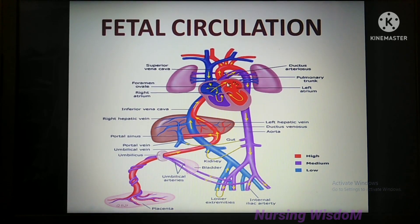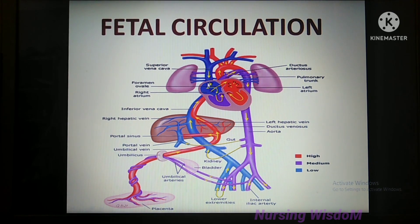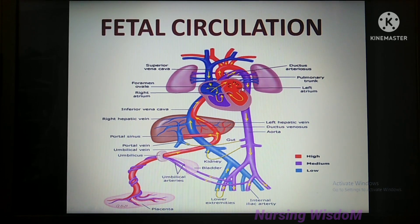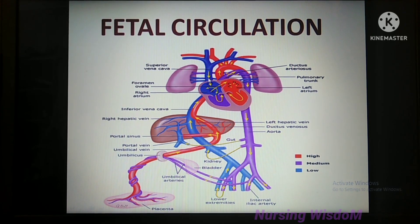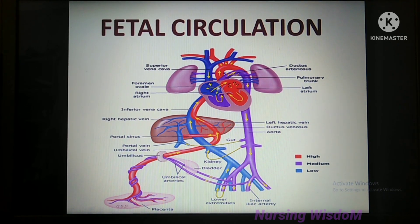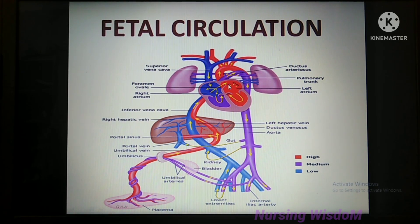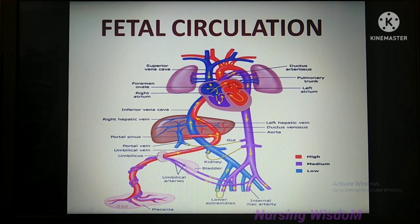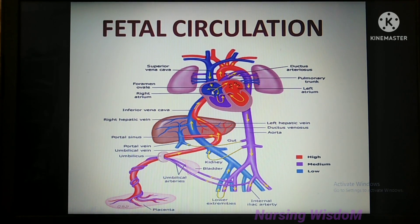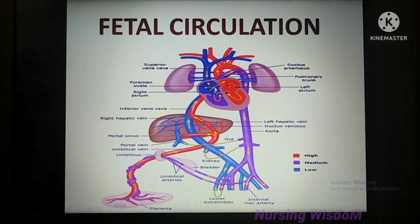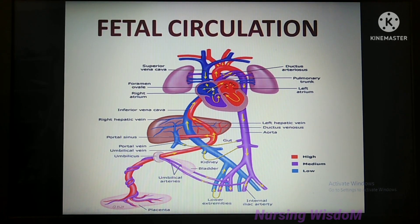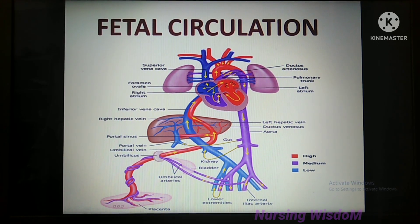The less oxygenated blood coming from the superior vena cava goes from the right atrium to the right ventricle. There are thus two distinct blood flows entering the right atrium: highly oxygenated blood from the inferior vena cava goes to the left atrium via foramen ovale, while less oxygenated blood from the superior vena cava goes to the right ventricle. A little amount of blood from the inferior vena cava also enters the right ventricle. This is the third place where highly oxygenated and less oxygenated blood mix — at the right atrium.